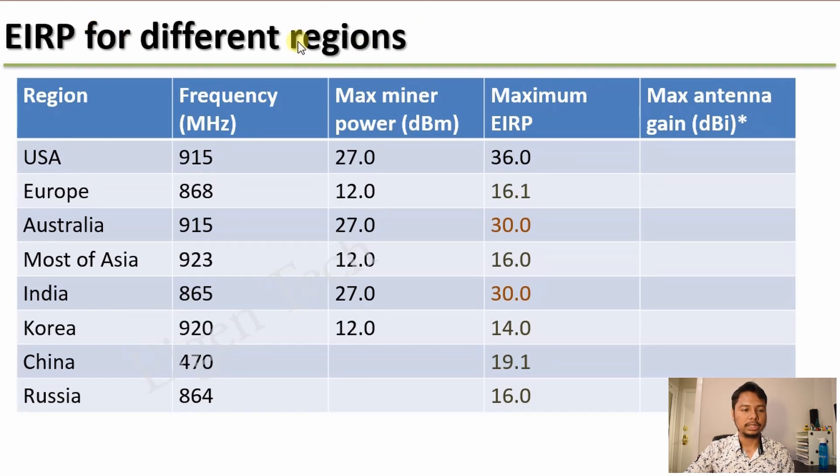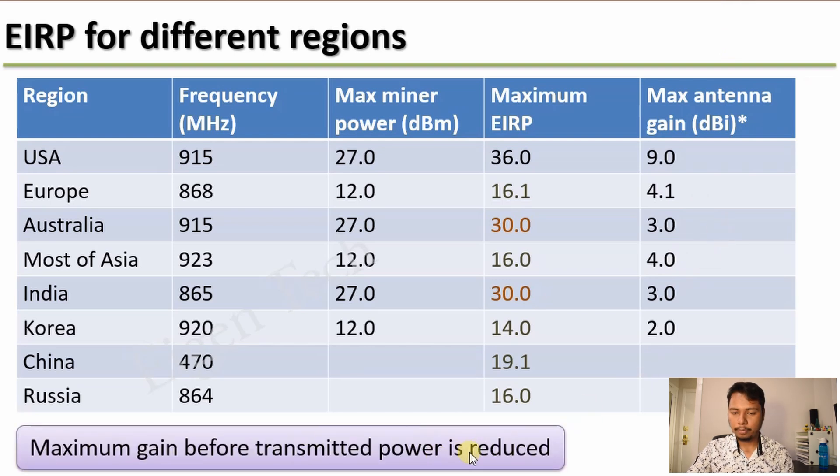So let us now check EIRP for different regions or different countries. This column is showing you the frequency used by the Helium miners for USA, Europe, Australia, Asia, India, Korea, and other countries. This column is showing you the maximum power typical Helium miners are capable of radiating. And this is the number of maximum EIRP which comes from local regulation. For USA it is 36.0, for Europe it is 16.1, Australia 30, and so on. The maximum antenna gain that you can use before the transmitted power is reduced is simply the difference of maximum EIRP and maximum miner power. So for USA it will be about 9 dBi, for Europe 4.1, and so on.